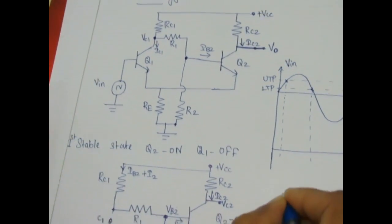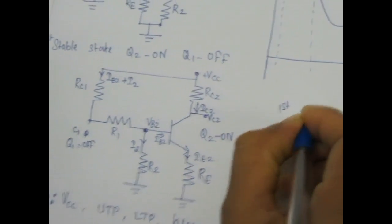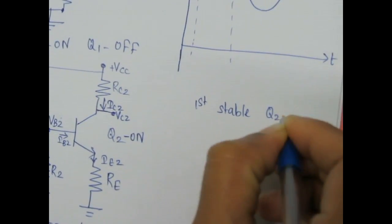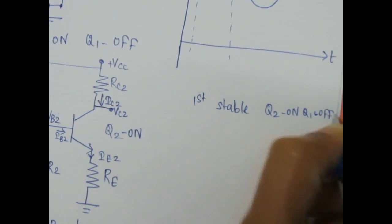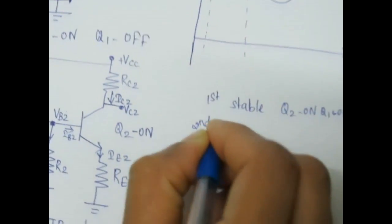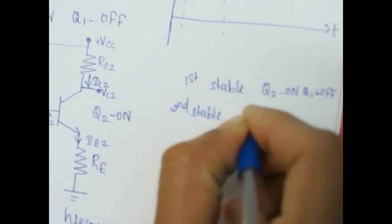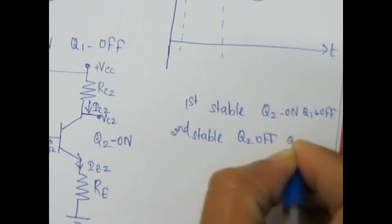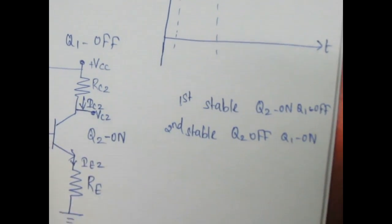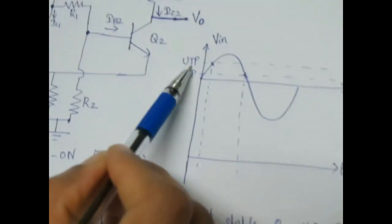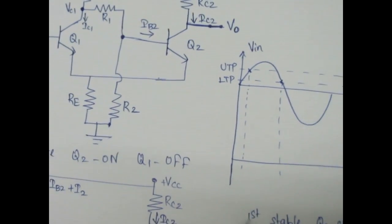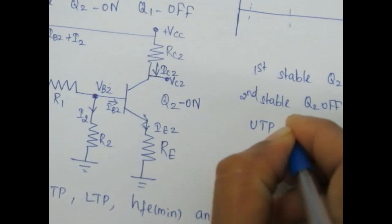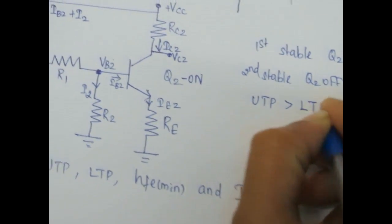The first stable state assumes Q2 is on and Q1 is off. The second stable state is Q2 off and Q1 on. Depending upon the upper threshold voltage and lower threshold voltage it will change its stable state. The upper threshold voltage level will be greater than the lower threshold point.